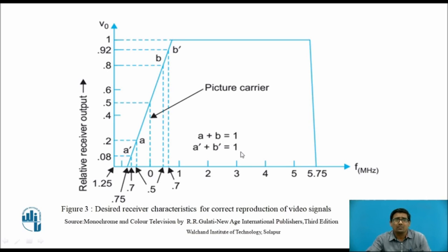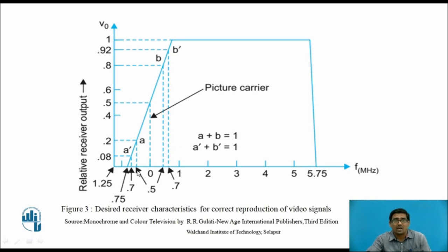Observe the frequencies one by one. At 0.5 MHz, the signal is present at both the upper sideband and lower sideband — above 0 is called upper sideband and below 0 is called lower sideband. At 0.5 MHz, the lower sideband voltage is 0.2, and for the upper sideband it is 0.8. When you add 0.2 plus 0.8 it becomes 1. Therefore a = 0.2 and b = 0.8, satisfying a + b = 1.